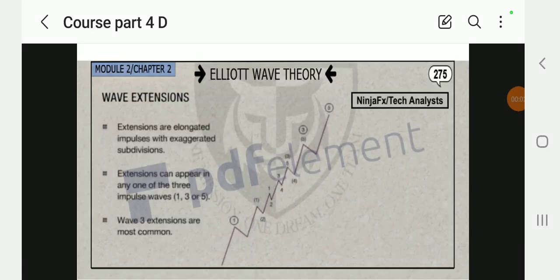Yo yo yo, what's happening people, this is Baby and Frank Portrait Point Life, and today we're back again with another episode. Today we're gonna cover the same topic, Elliott Wave Theory, but the subtopic is wave extensions. So extensions are elongated impulses with exaggerated subdivisions. Extensions can appear in any one of the three impulse waves: one, three, or five.